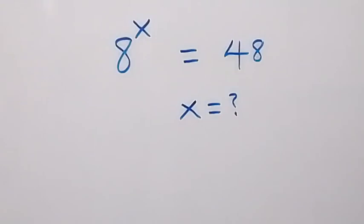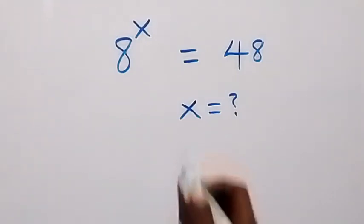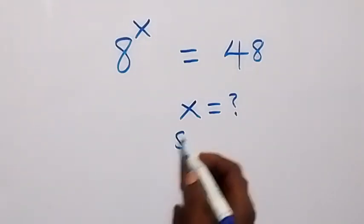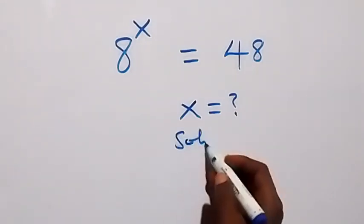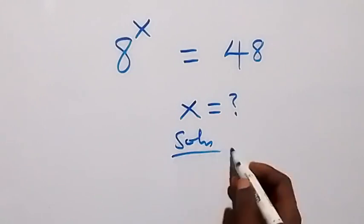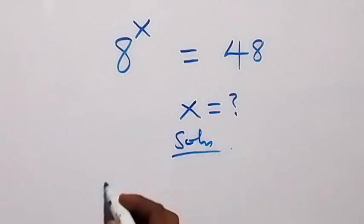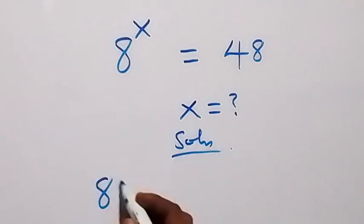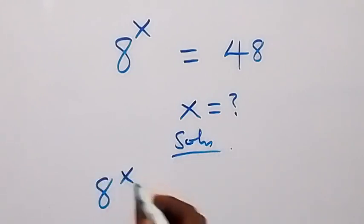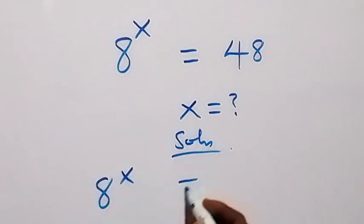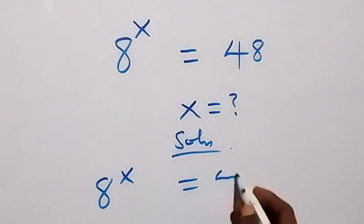Hello, you are welcome. How to find the value of x in this nice exponential equation? What we are given is: a raised to power x equals to 48.